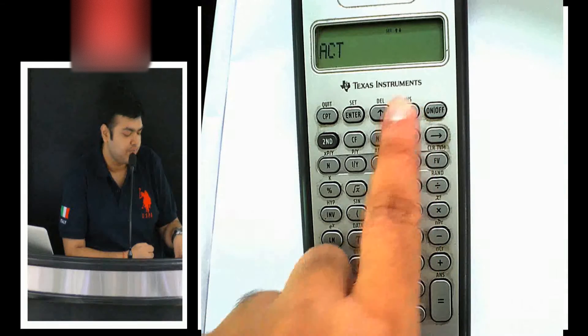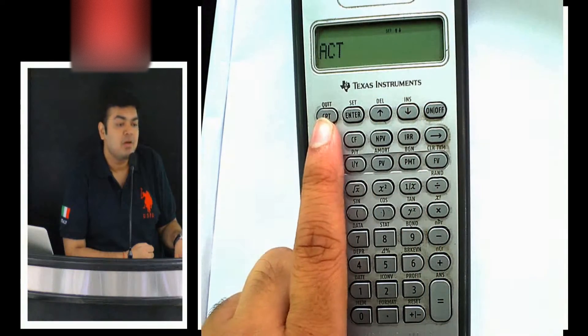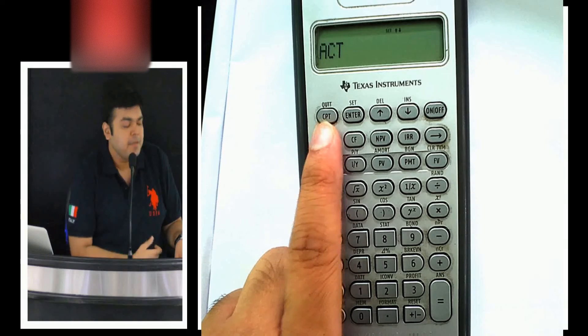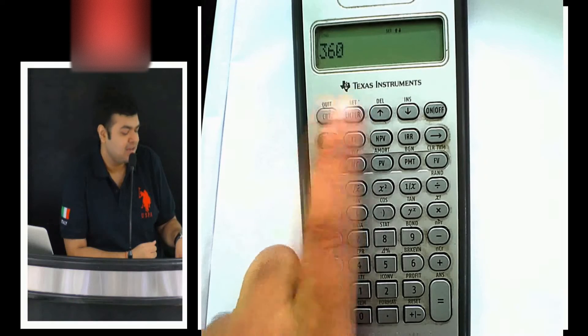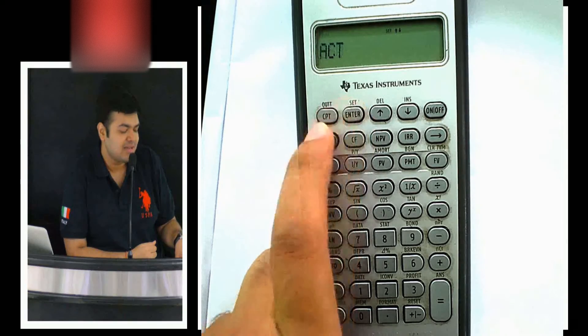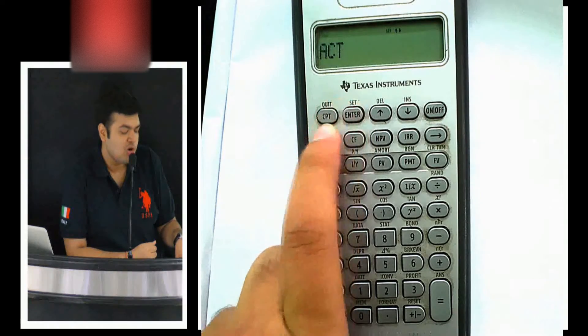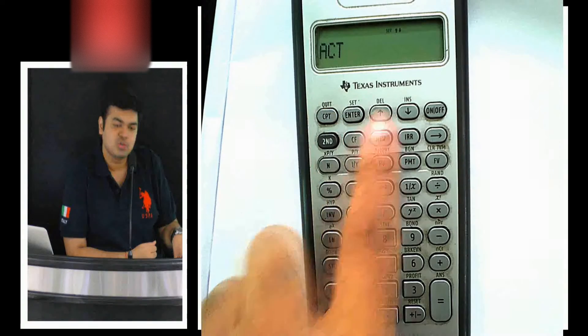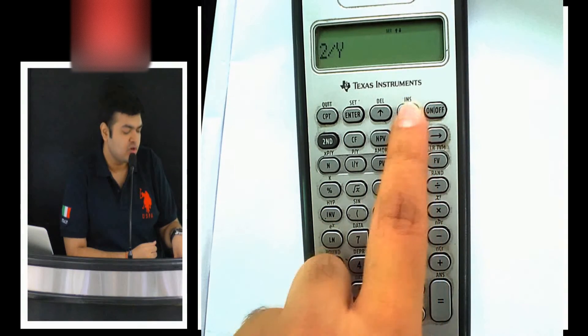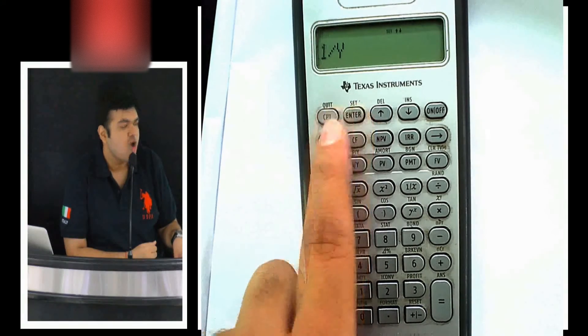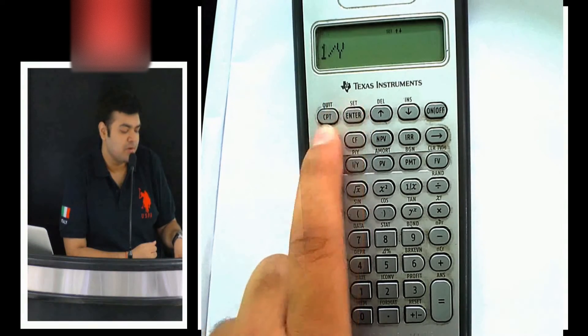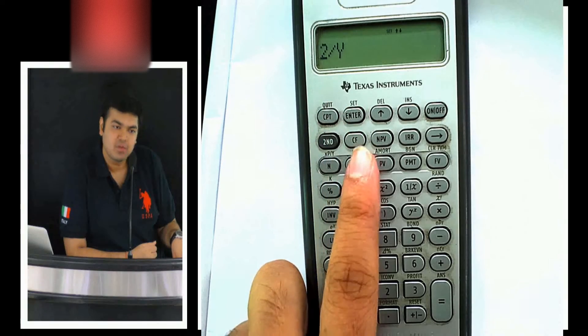Will the coupons be paid on an actual day basis or a 360 day basis? You can set the actual number of days. Let me keep it actual. Is the coupon semi-annual or one annual payment? One per year or two times per year? Semi-annual.